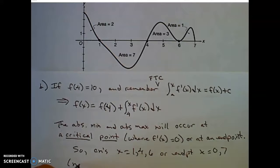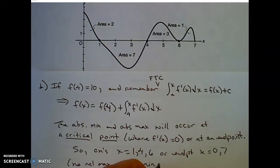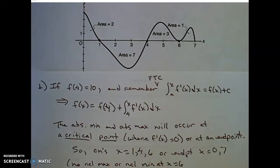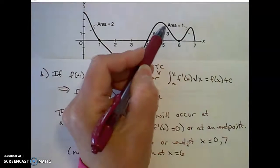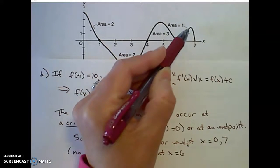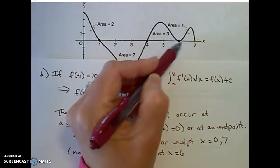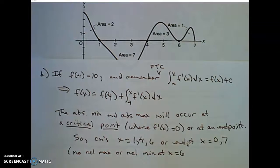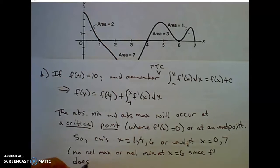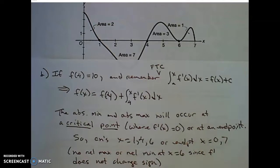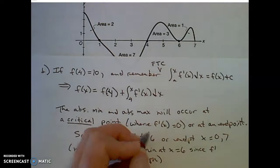You might want to notice that there is no relative max or relative min at x equals 6. Look at that graph — since the derivative does not change signs, it does not change from increasing to decreasing or decreasing to increasing. The derivative is positive on that interval, so f is increasing there. If you test x equals 6, that's fine, but we don't have to test x equals 6.